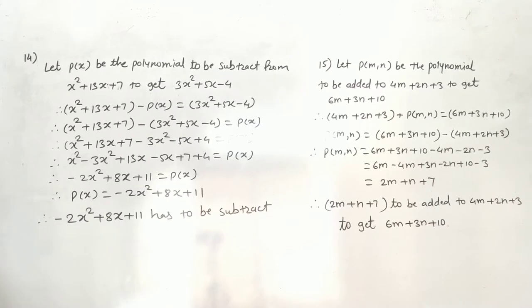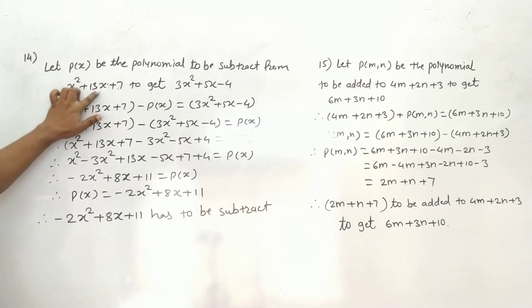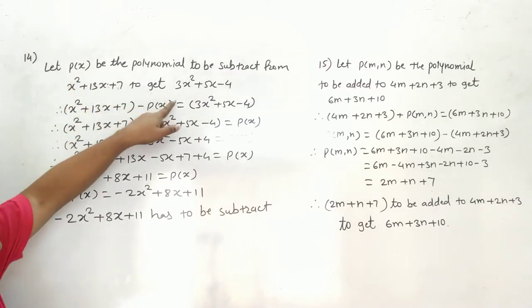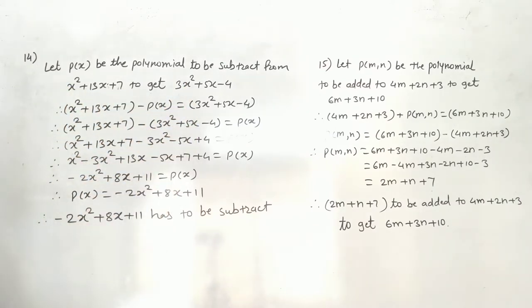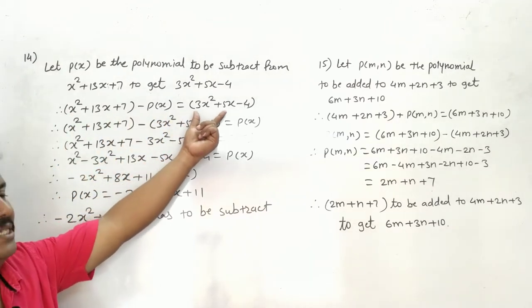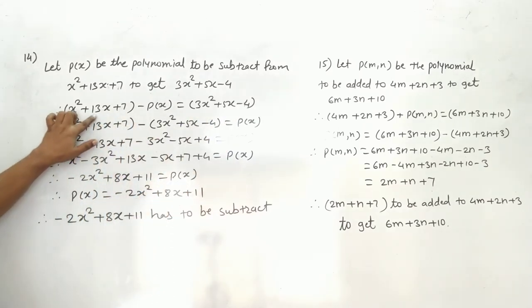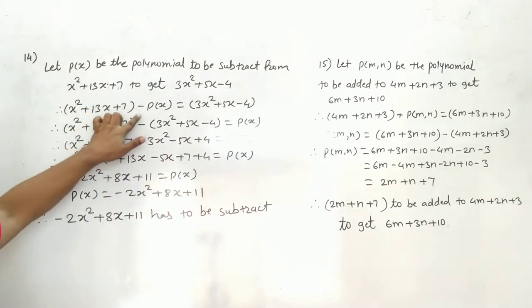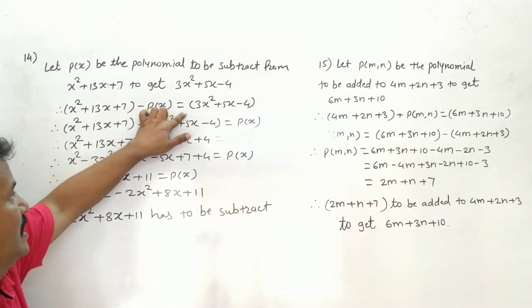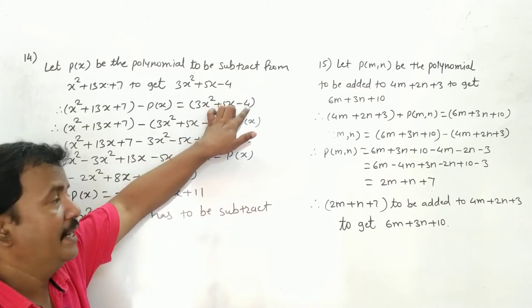Let p(x) be the polynomial to be subtracted from x² + 13x + 7 to get 3x² + 5x - 4. So, x² + 13x + 7 minus p(x) is equal to 3x² + 5x - 4.